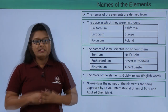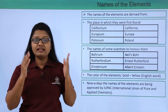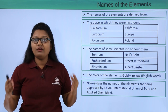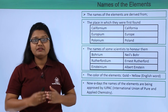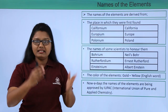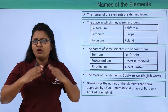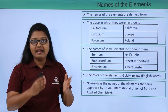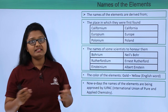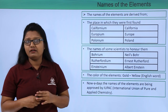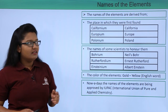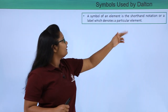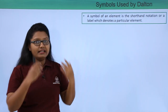There are 118 elements in total, each with its own long name, and in chemistry we come across these elements and their names all the time. It becomes tedious to write the full names of these elements whenever we come across one, so we humans have come up with a shorthand notation or label for all the elements.